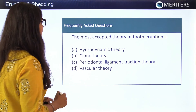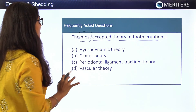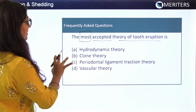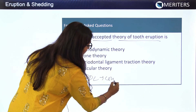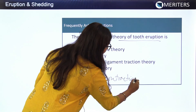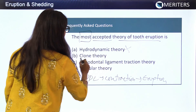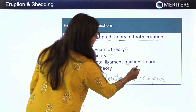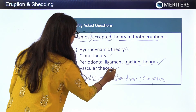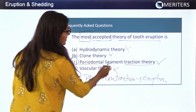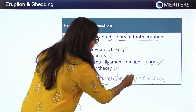Another frequently asked question: what is the most accepted theory of tooth eruption? Out of the seven theories explained, the most logical is based on the PDL, which has contractile properties that lead to eruption. Looking at the options: hydrodynamic theory — no; clone theory — no; periodontal ligament traction theory — yes, this is the accepted theory; vascular theory — no. The answer is C: periodontal ligament traction theory, accepted due to its contractile properties which lead to tooth eruption.